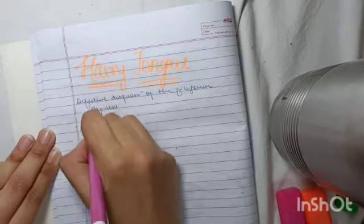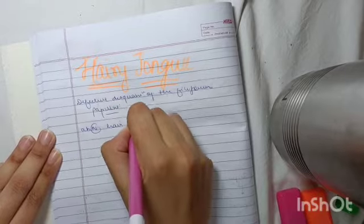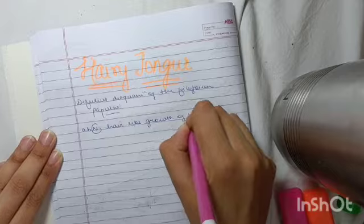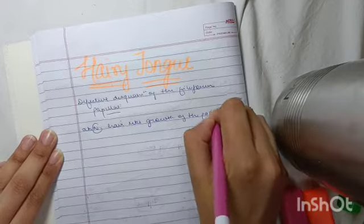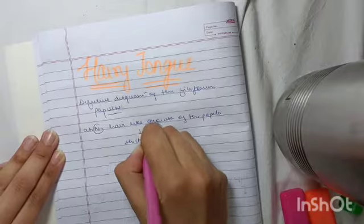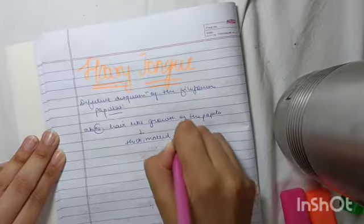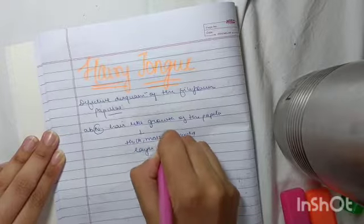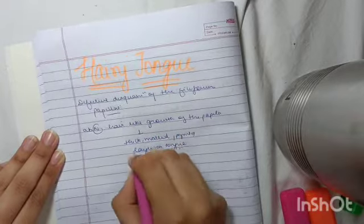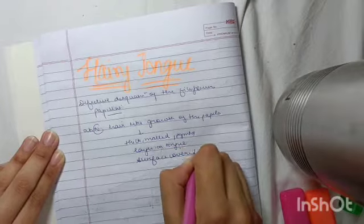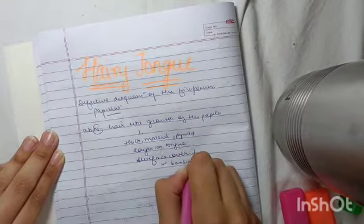Basically, it is an abnormal hair-like growth. Why is it called hairy tongue? Because it is the abnormal hair-like growth of the papilla which eventually leads to the formation of a thick, matted, pigmented layer on tongue surface covered with bacteria and fungi.